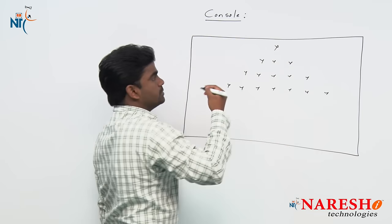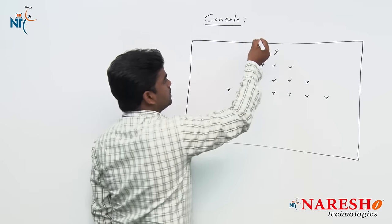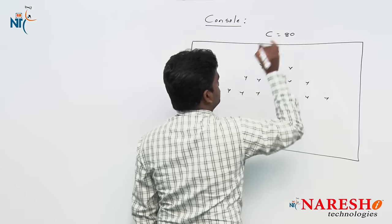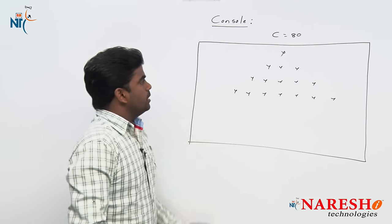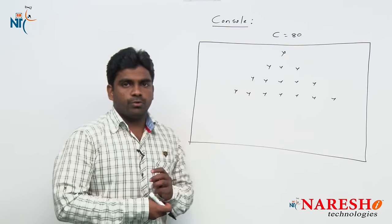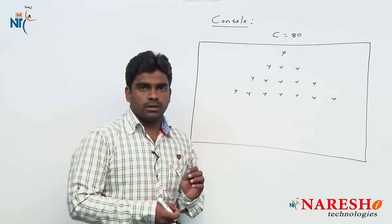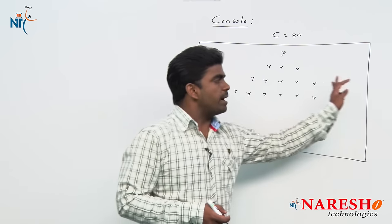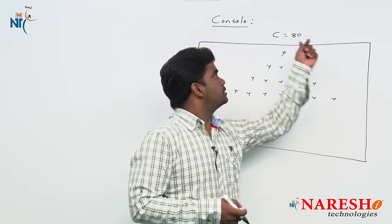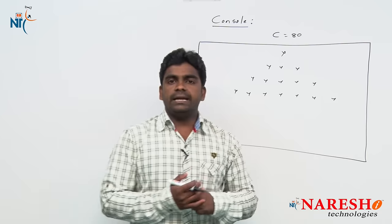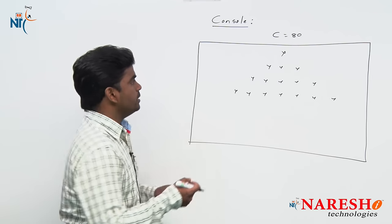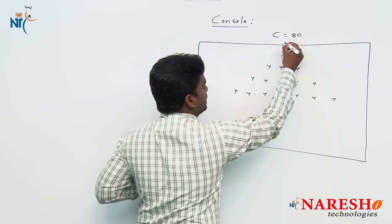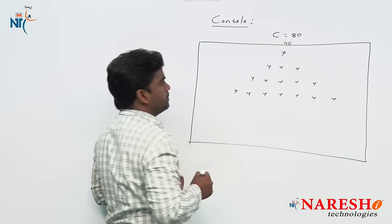Horizontally, we can print a maximum of 80 characters, and vertically 25 lines — though that is not too important since we can scroll down. The maximum width used to print is only 80 characters. So here we need to print at the 40th character — nothing but C divided by 2.